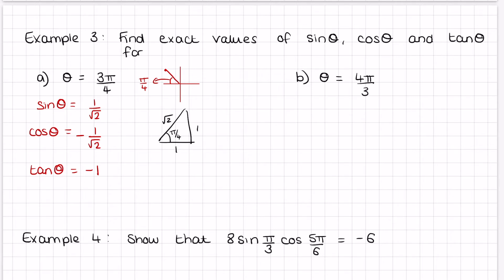Part b: θ = 4π/3. On the unit circle, 4π/3 is in the third quadrant. The angle to the x-axis: 3π/3 = π, and 4π/3 is just one more π/3, so this angle is π/3, which is 60 degrees. In our exact value triangle, the sides are 2, 1, √3, and π/3 is here.